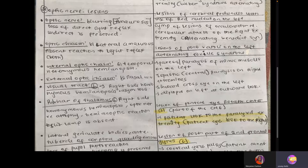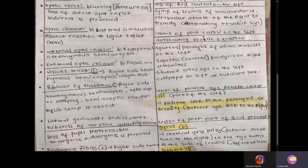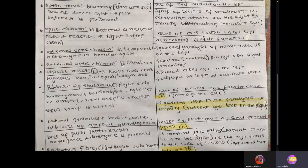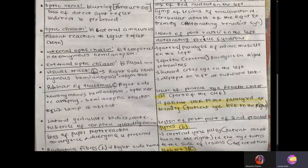Depending on where the lesion is in the optic chiasm pathway, if it's in the internal part, it will be bitemporal heteronymous hemianopsia. If it's the external part, it will be binasal heteronymous hemianopsia. If it's the optic tract — not optic nerve — and if it's on the left side of the optic tract, it will be right-side homonymous hemianopsia.